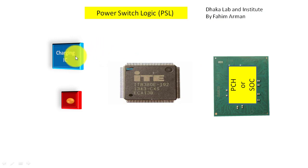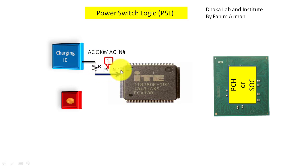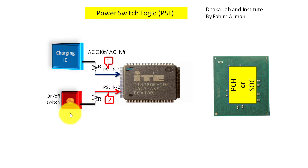We can see there is a charging IC. First of all, when you insert an adapter, there will be a signal — AC_OK# or AC_IN#. This signal will come through a resistor to the IO pin named PSL_IN1, and that will be low. As I told you, AC_OK# or AC_IN# means there will be a low signal.